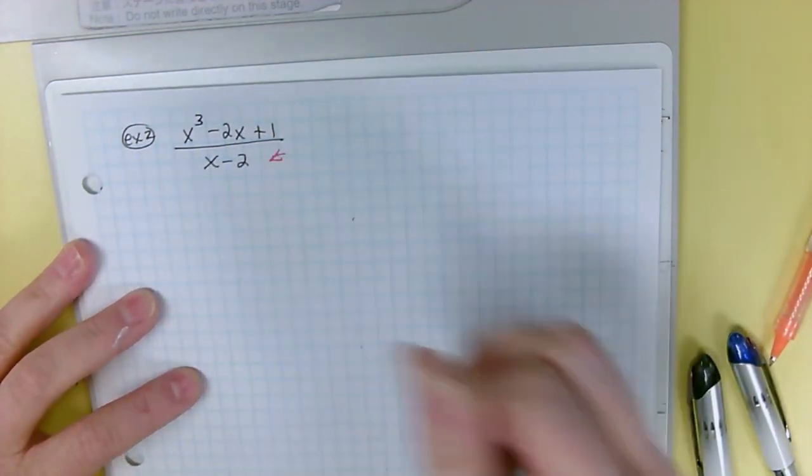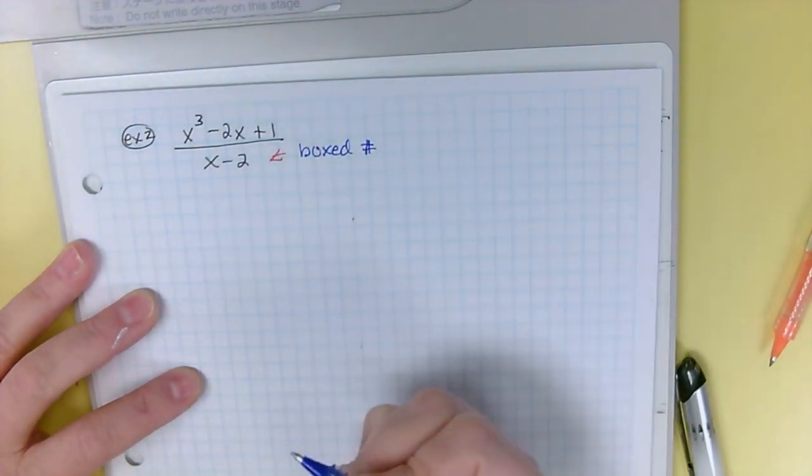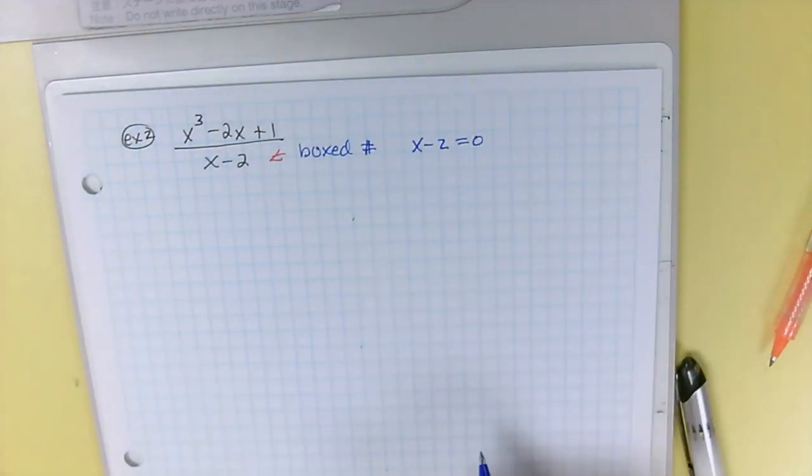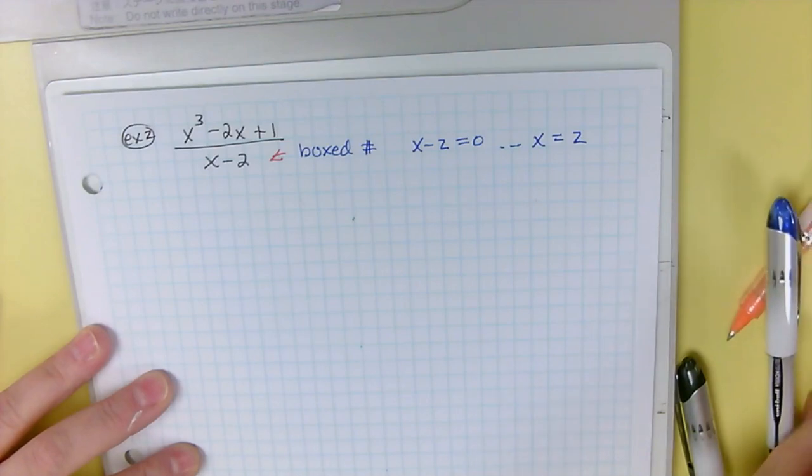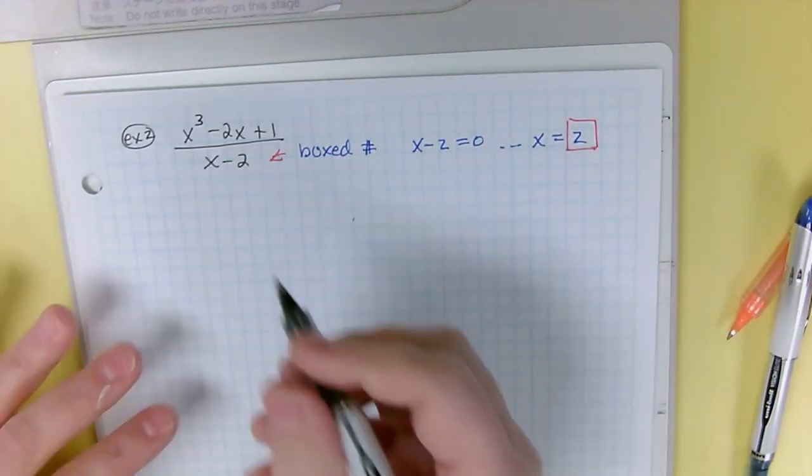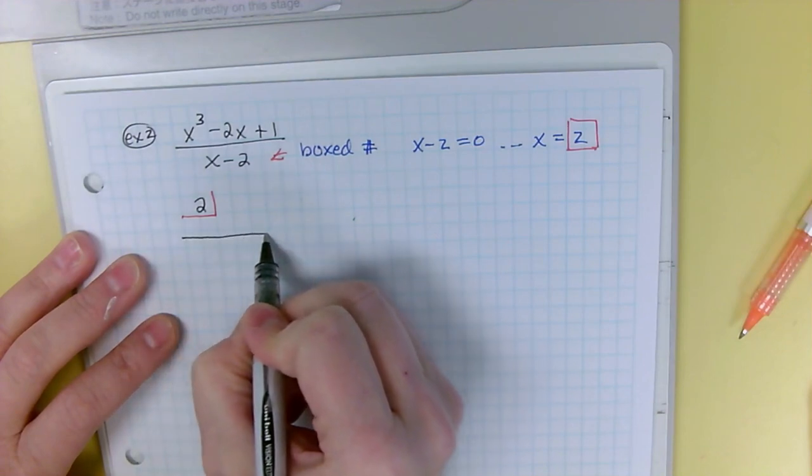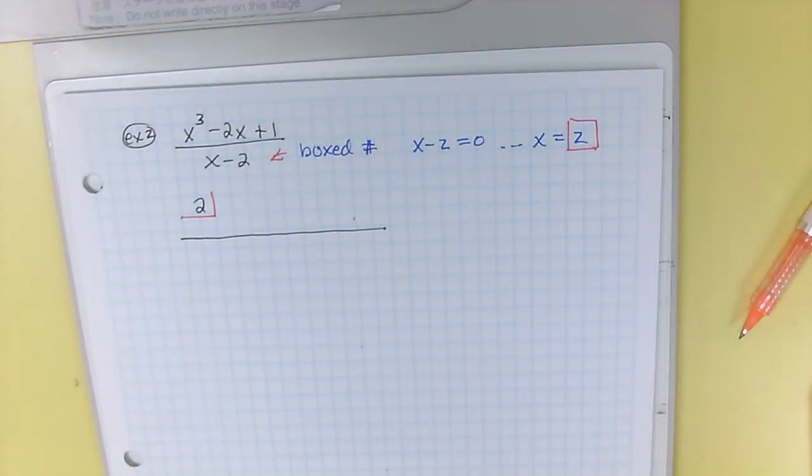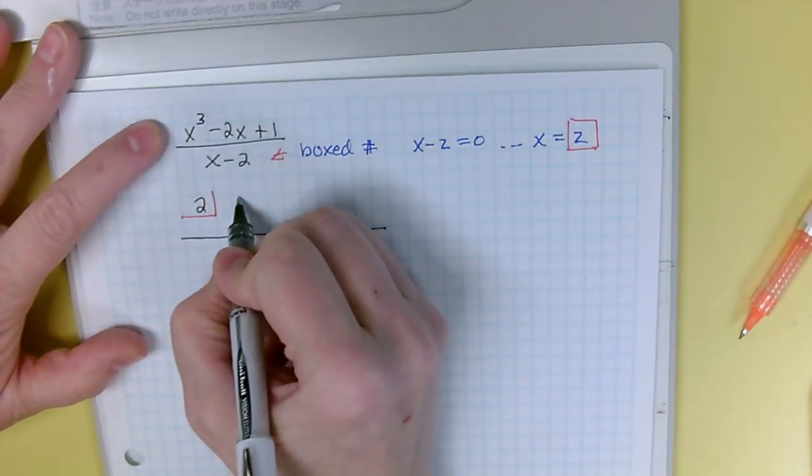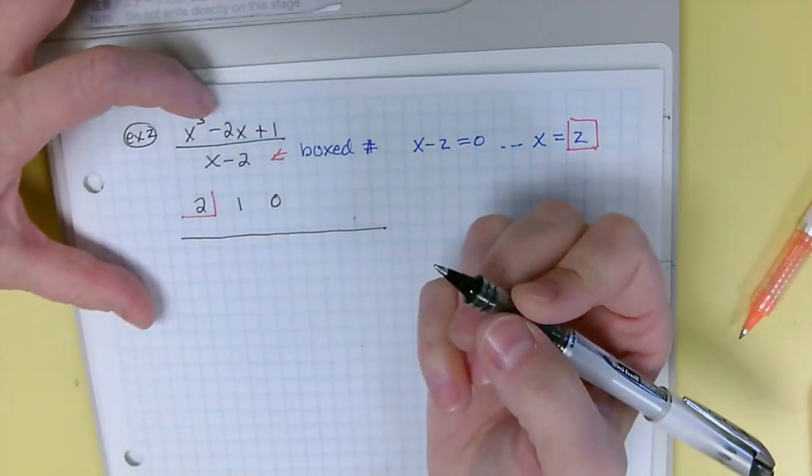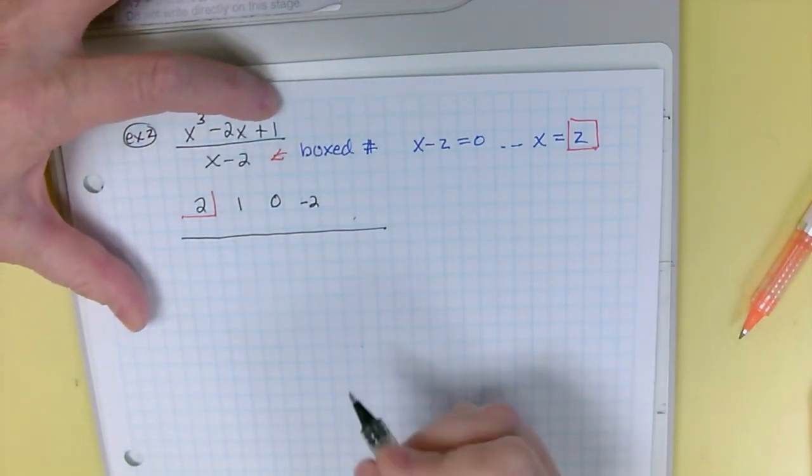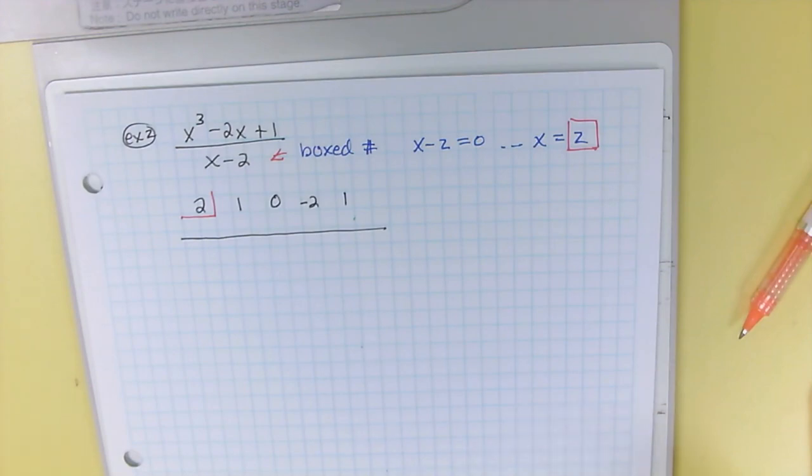So remember that to get your boxed number, you take the divisor, x - 2, set it equal to zero, and solve it, which gives you x = 2, positive two, for your box number. So put your two in the box. Skip a line, draw a line. Now we look a little bit ahead and we go, huh, it goes x³ to x. I need an x² term, so I'm going to have to fill. It does have a number at the end though, so I'm good there. So my coefficient is going to be a one for the x³, a zero for the missing x², a -2 for the x, and then my number term is a one.